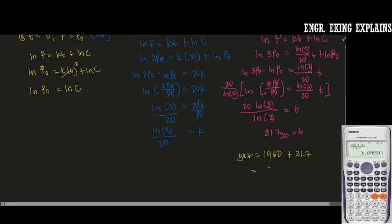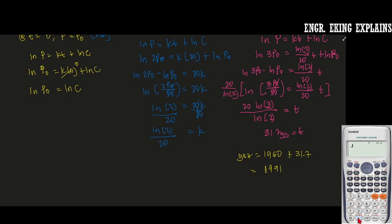So the year is 1991, but we have a 0.7, so if we are going to have the 0.7 in months, so 0.7 times 12,